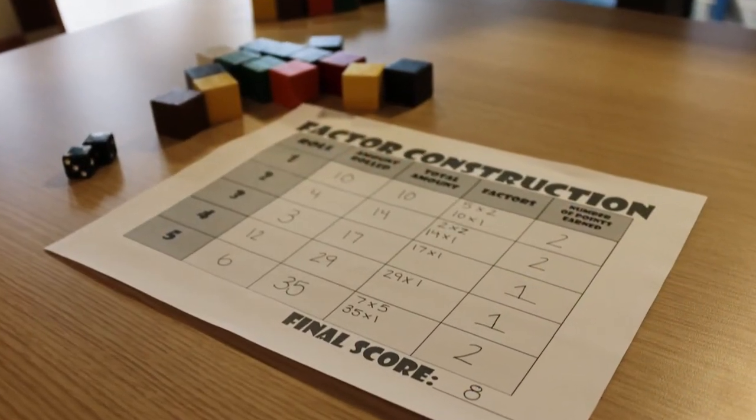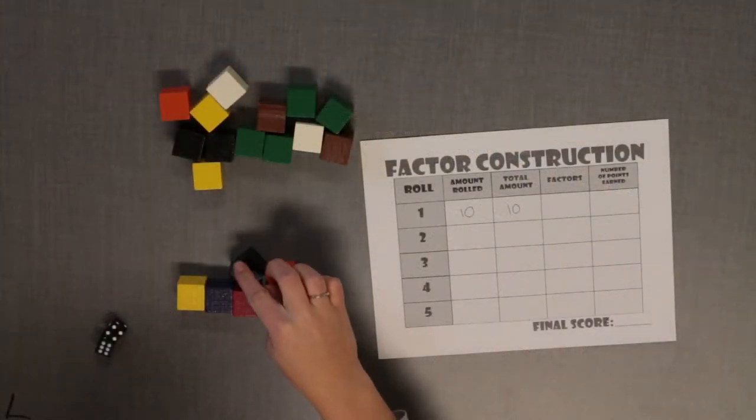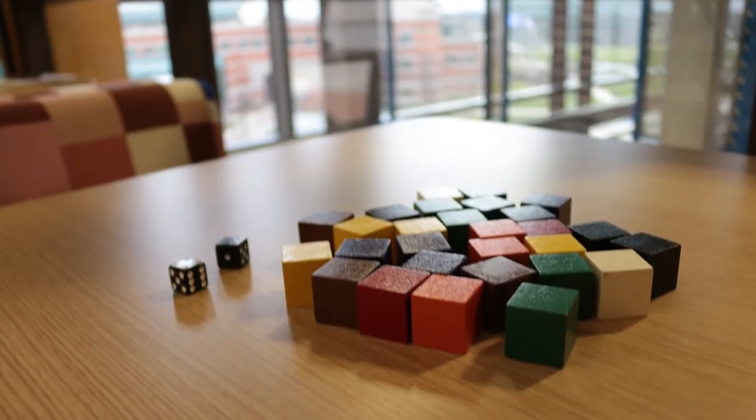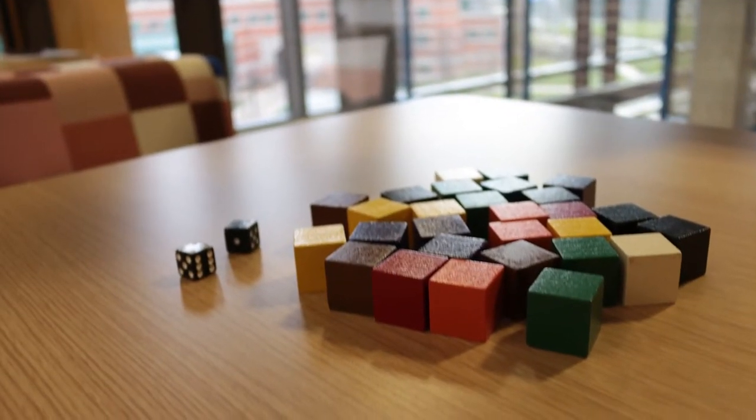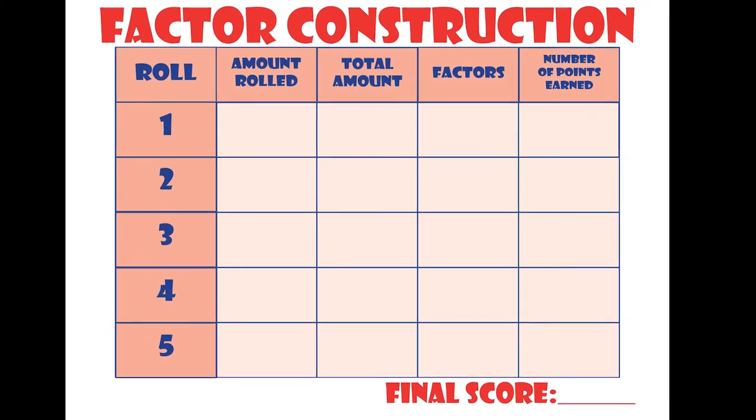Each time you find and build a correct factor pair, you earn a point. The goal of this game is to earn as many points as you can. The materials you need to play this game are sets of 40 cubes and a recording sheet for each player. You also need two six-sided dice.